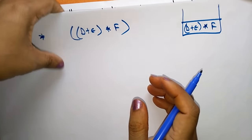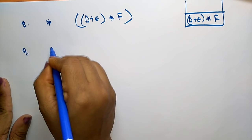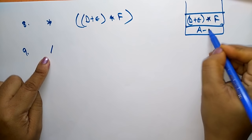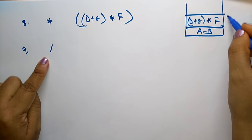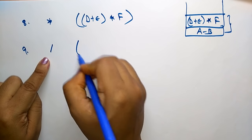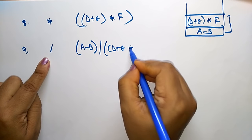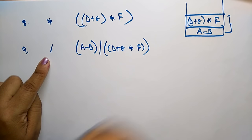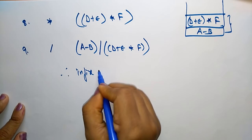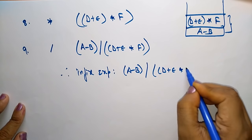After the star, the next postfix element to read is divide. Whenever an operator is encountered, pop the top two elements and perform the operation. So now it becomes A minus B divide D plus E star F on the top of the stack. Therefore the infix expression is A minus B divide D plus E into F.